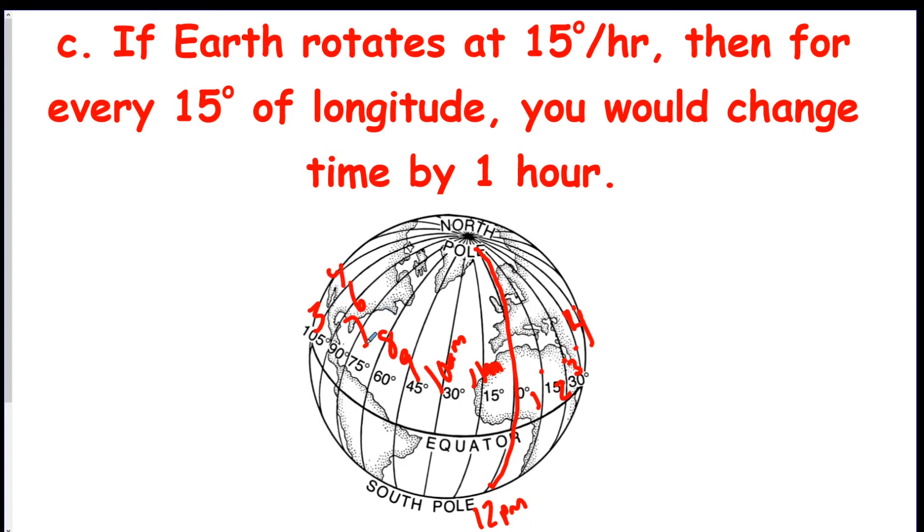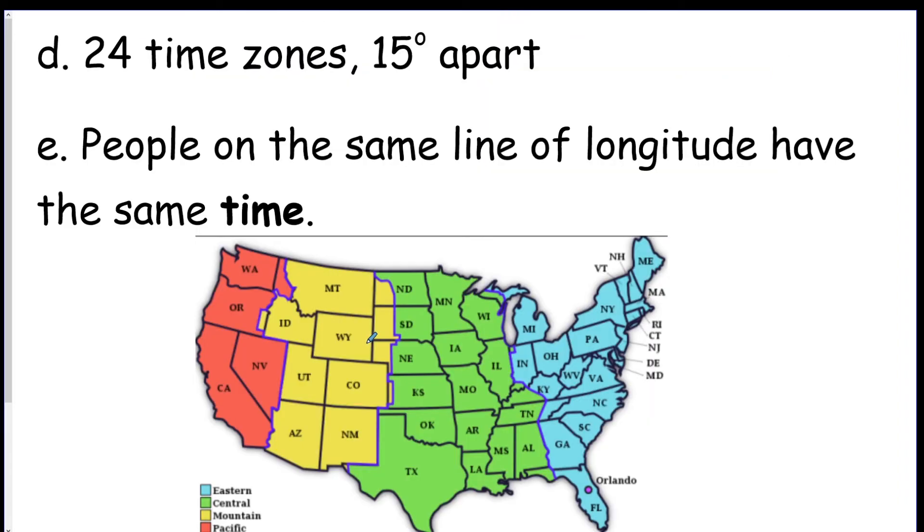So these lines of longitude gave us our time zones. So there's 24 total time zones because they're each an hour apart, and there's 24 hours in a day. And anyone in that same longitudinal zone, like I said, is going to have the same time. So like Wyoming here and Arizona, they're in the same time zone, so they're the same time. But Wyoming and Texas are an hour apart because they're one time zone apart.